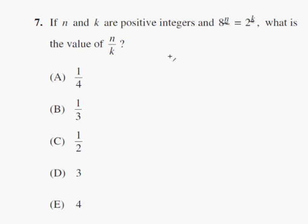So we need to express 8 as 2 to a power. 8 is really 2 to the third to the n. Well, what do we know with an exponent? We know that if you raise a power to a power you multiply. So we know that 2 to the 3n equals 2 to the k.